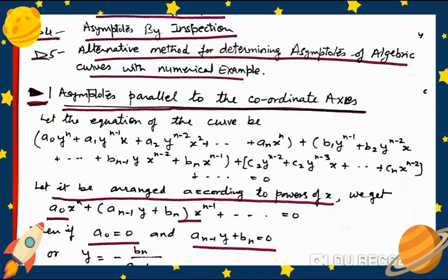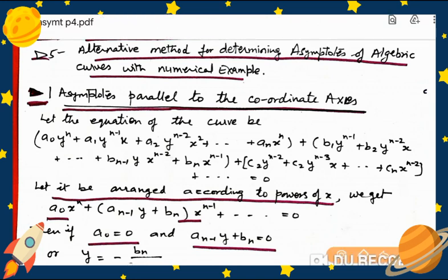Let the equation of the curve be of this form: A₀yⁿ + a₁yⁿ⁻¹x + a₂yⁿ⁻²x² + ... + aₙxⁿ + b₁yⁿ⁻¹ + b₂yⁿ⁻²x + ... + bₙxⁿ⁻¹ and further lower degree terms.